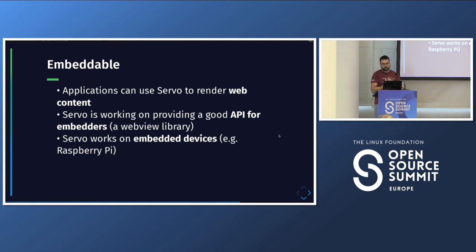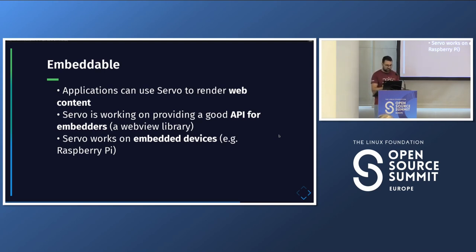Servo is embeddable in two senses. Applications can use Servo to render web content — we are working on providing a good API for embedders, like a WebView library so others can start using Servo easily. But also Servo works on embedded devices, like constrained low-power devices — for example, the Raspberry Pi. We have a Raspberry Pi running Servo at the Linux Foundation Europe booth downstairs.